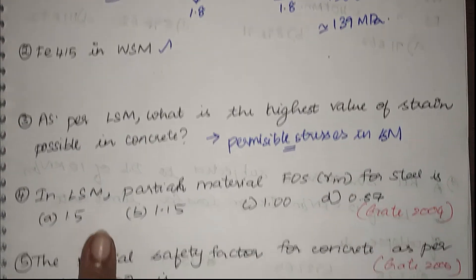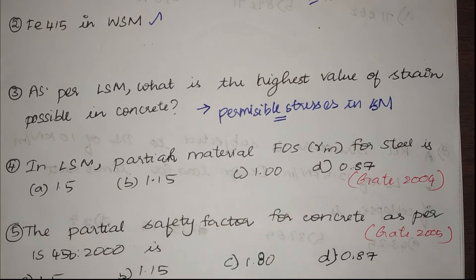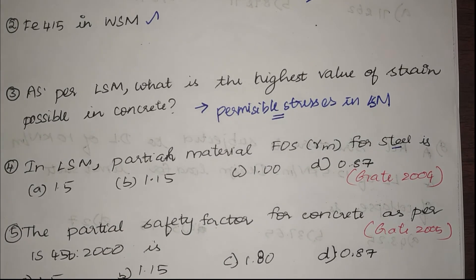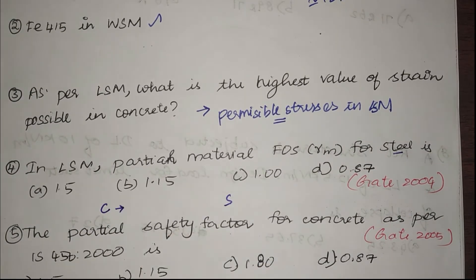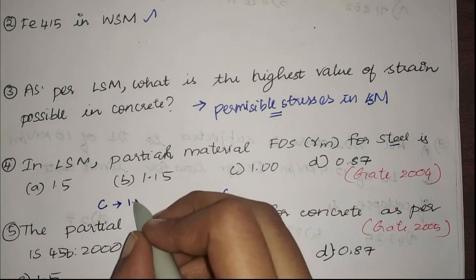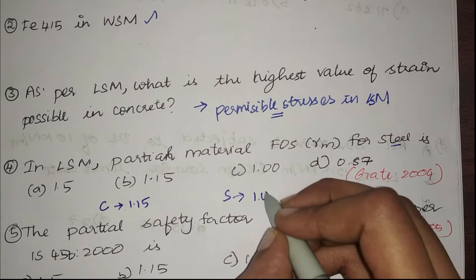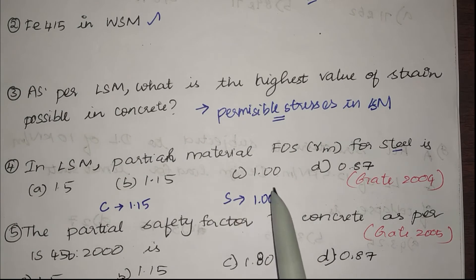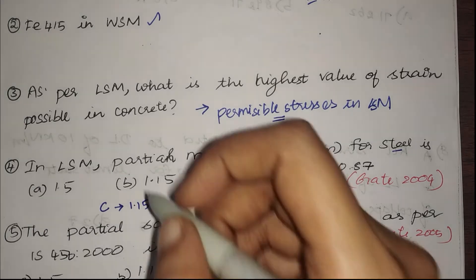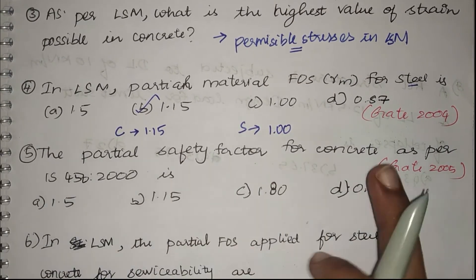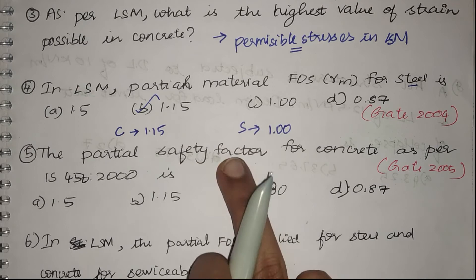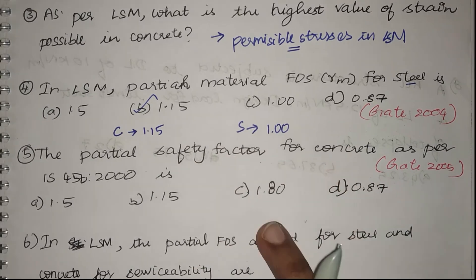Next question: in limit state method, what is the partial factor of safety for steel? In limit state method we have two categories — limit state of collapse and limit state of serviceability. For limit state of collapse, the partial safety factor for steel is 1.15; for serviceability it is 1.0. When you have both options, go with the limit state of collapse partial safety factor. The next question asks for the partial safety factor for concrete as per IS 456-2000 — comment your answers below.